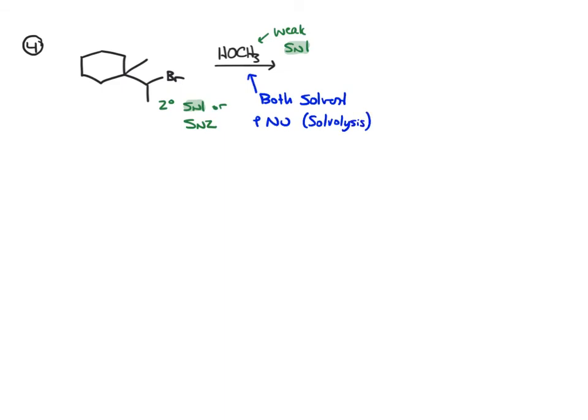So since we know it's SN1, we can walk through the mechanism to get to the product. The first step is loss of the leaving group to give the carbocation. So let's draw that. Now any time we have a carbocation, check for rearrangement. This is a secondary, secondary cation. If we do a methyl shift, we can get a tertiary carbocation, which is more stable. And that does happen. So we get this intermediate.